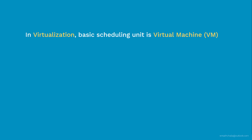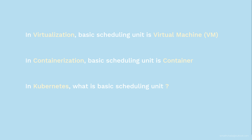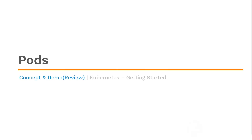In virtualization space the basic scheduling unit is a virtual machine, and in container space it is a container. So in Kubernetes, what is the basic scheduling unit? Hello and welcome to Pods. My name is Sreena Challa, I'm a certified Kubernetes administrator. In the next few minutes I'll try my best to get you up to speed on what pods are in Kubernetes, what is the difference between a container and a pod, and how to create pods in Kubernetes. Before you watch this video it is required to have a basic understanding of what Kubernetes is and its basic architecture. If you need help with that, please check the links in the description below.